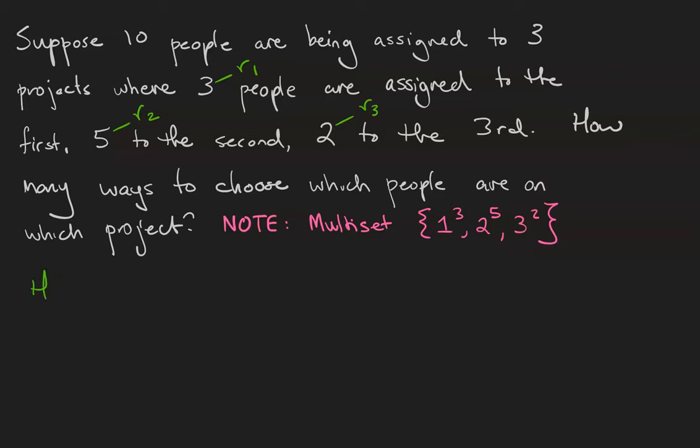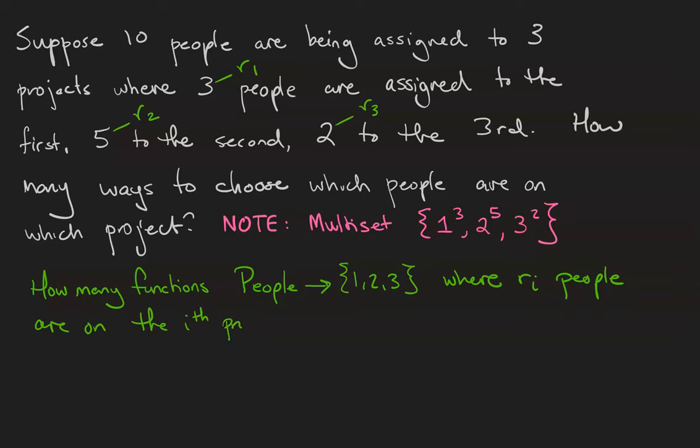We want to know how many functions there are from the set of people to the set {1, 2, 3}, where Rᵢ people are on the i-th project. That's how this question relates to counting functions.